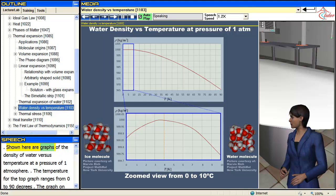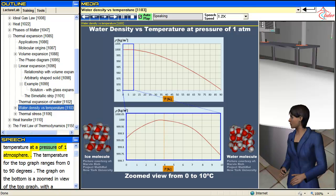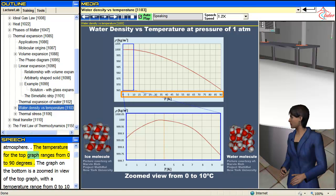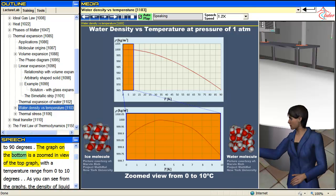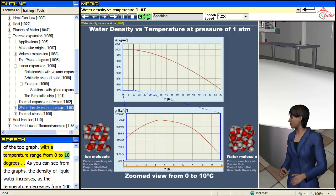Shown here are graphs of the density of water versus temperature at a pressure of 1 atmosphere. The temperature for the top graph ranges from 0 to 90 degrees. The graph on the bottom is a zoomed in view of the top graph, with a temperature range from 0 to 10 degrees.